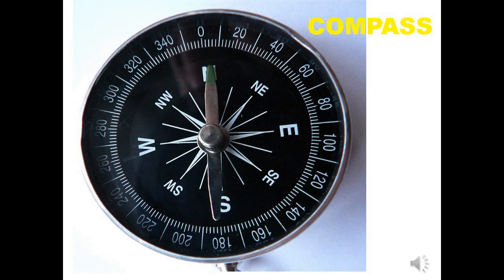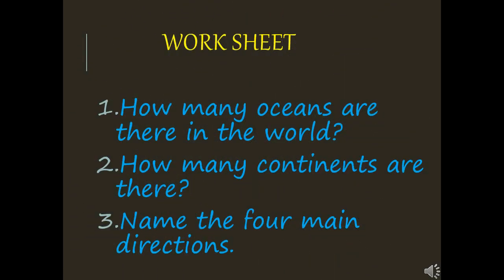This is the picture of a compass. A compass can be used to find directions. It has a needle that always points north. It is easy to find the other directions when we know where north is — down will be south, right will be east, and left will be west. Write the answers: How many oceans are there in the world? How many continents are there? Name the four main directions.